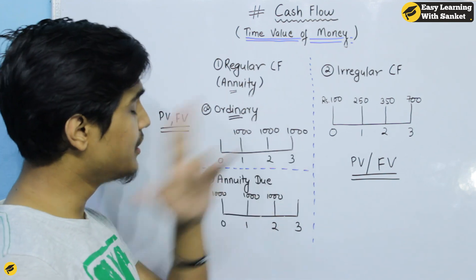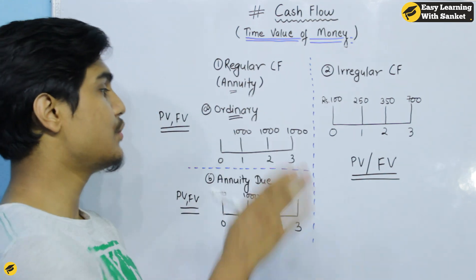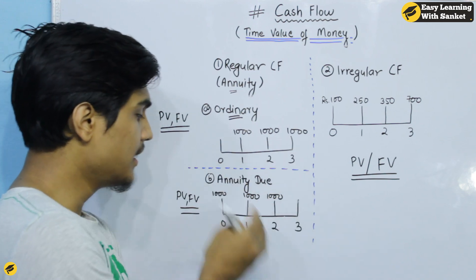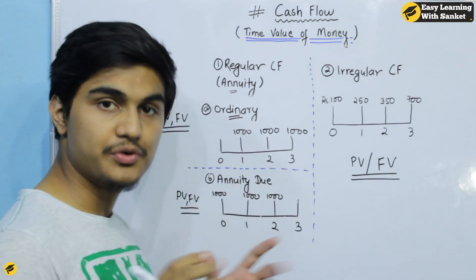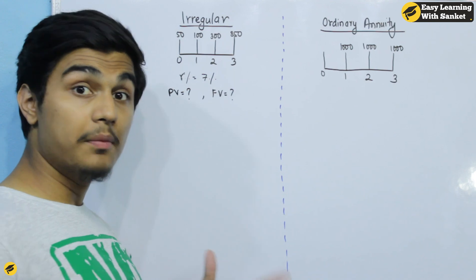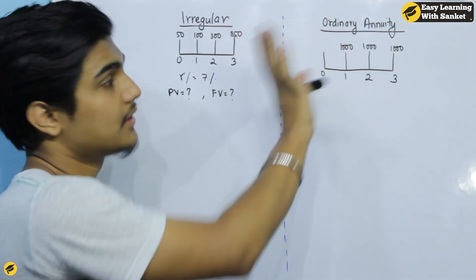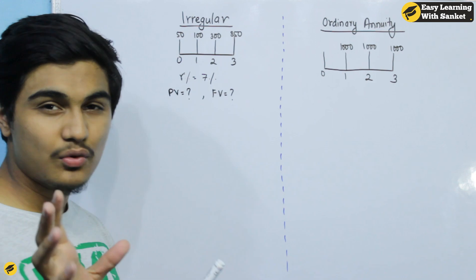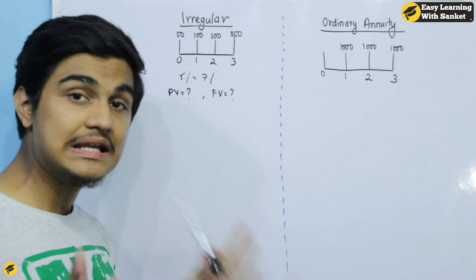Ordinary annuity and annuity due are different — the difference is in the payment period: end versus beginning. Now we have to work through the formula for irregular and regular cash flows. This basic concept is now clear.